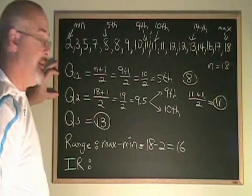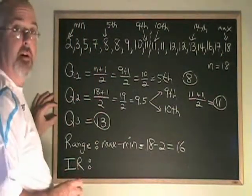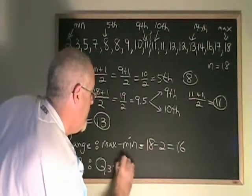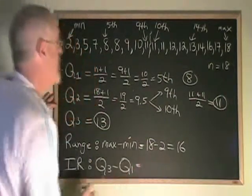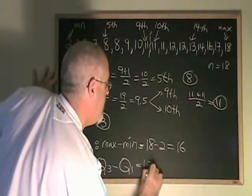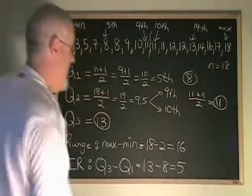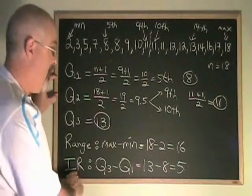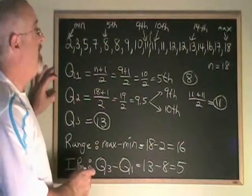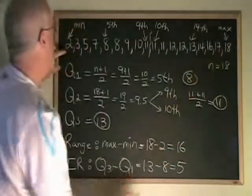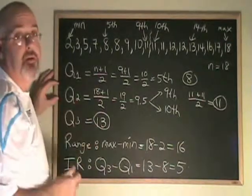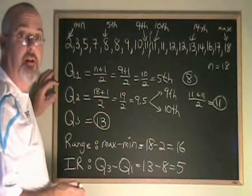Our range for this data is 16. Our interquartile range is Q3 minus Q1, which in this case is equal to 13 minus 8. Our interquartile range, our IR is equal to 5 for this data. This is the difference between range, which is very easy to calculate, largest number minus smallest number, and interquartile range, which has these extra steps. You need to know what your Q1 and your Q3 are before you can calculate it.